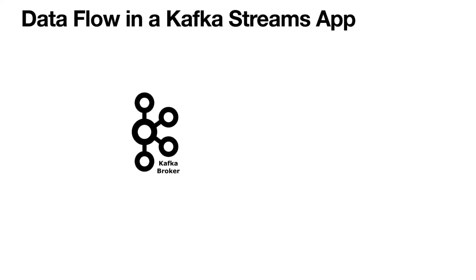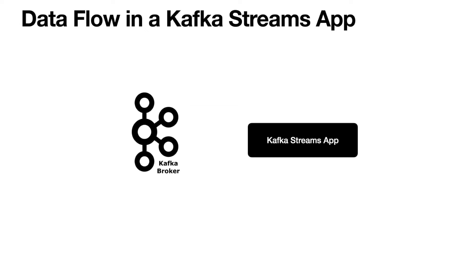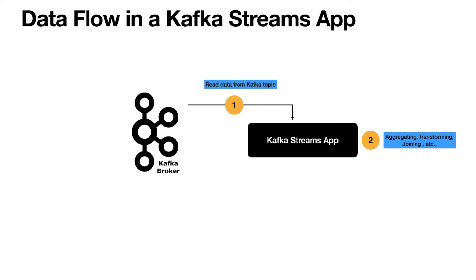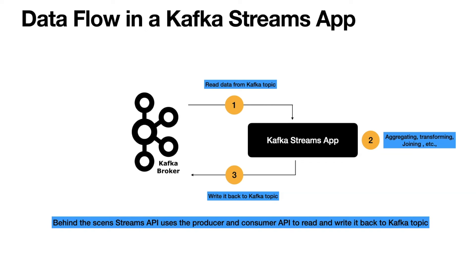Now let's talk about how the data flows in a Kafka Streams application. The Kafka Streams application initiates stream processing by subscribing to one or multiple topics, which is the first step in the whole flow. The second step is to act on the data from the Kafka topic — this involves different types of operations such as aggregating, transforming, or joining the data. Once the processing completes, the idea is to write the data back into the Kafka topic for downstream applications interested in this data. Behind the scenes, the Streams API uses the Producer and Consumer API to read and write data back into the Kafka topic.